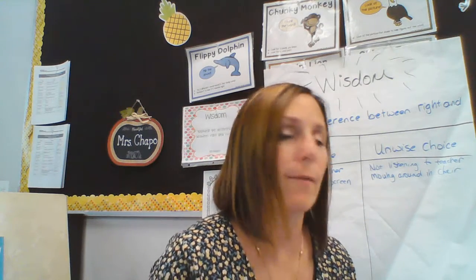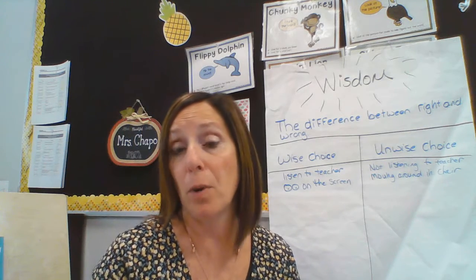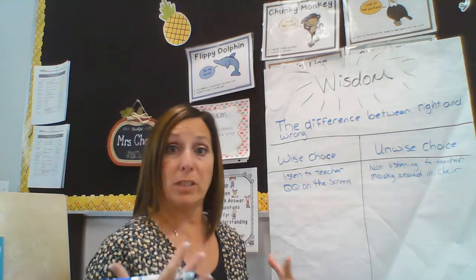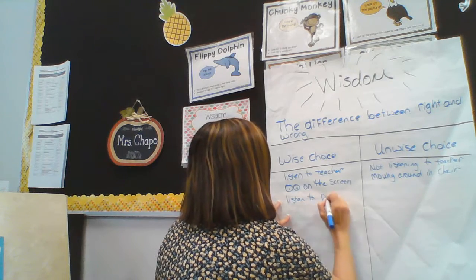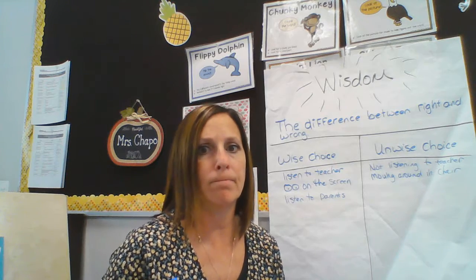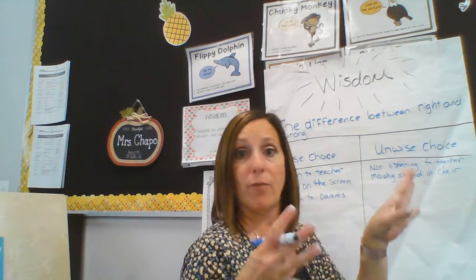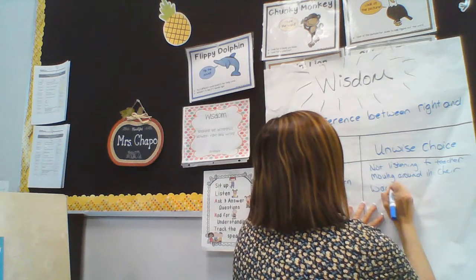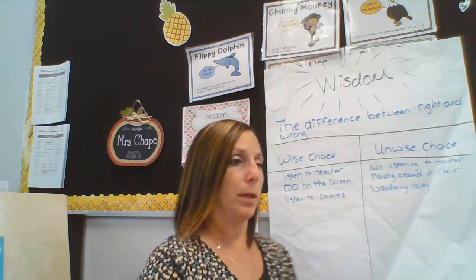Okay, let's see what else we have. How could you make some wise choices? Maybe if you go to a store with your mom and dad, how could that be a wise choice? I would think: listen to your parents, because if you're in a store, you need to stay with them. Listening to your parents, for sure, if you're in a store. What would be an unwise choice? Maybe wandering away from your parents — that would be unwise, going away from where they're at. That would be super scary.